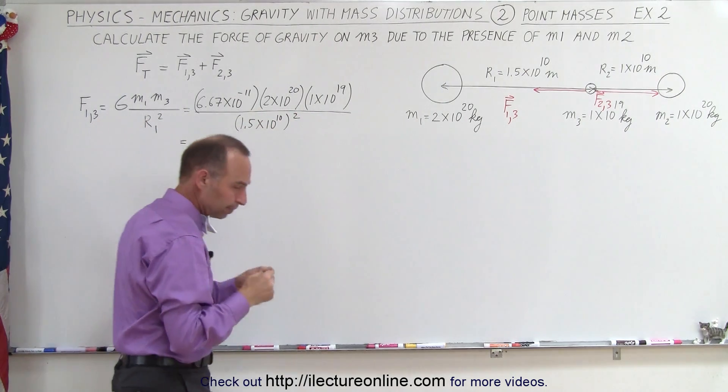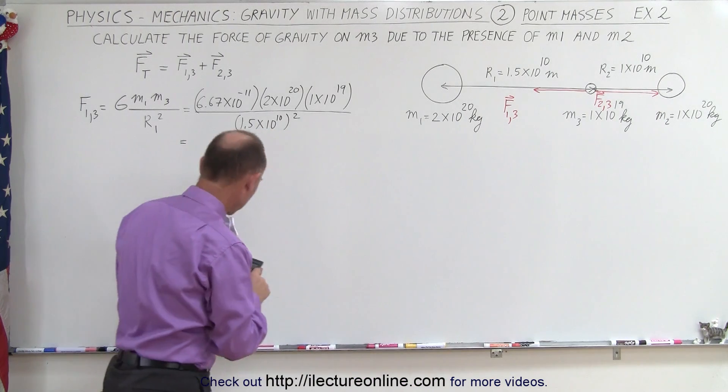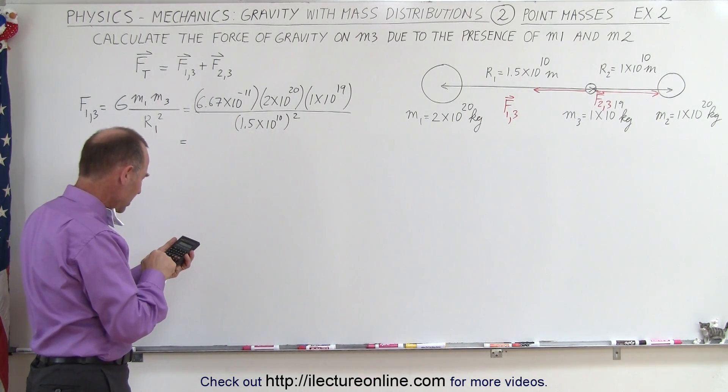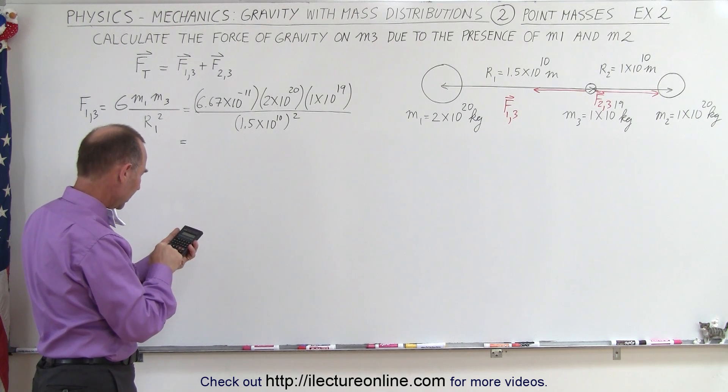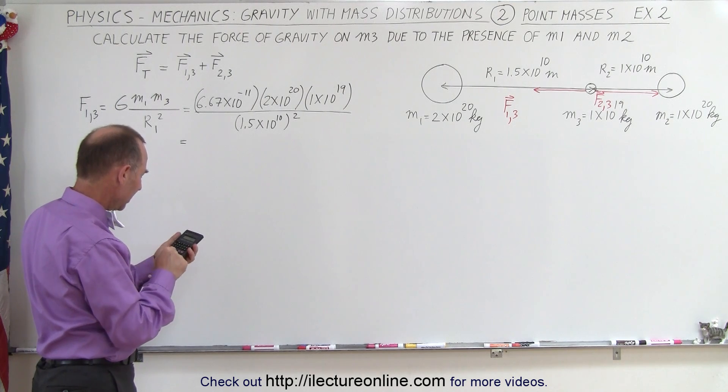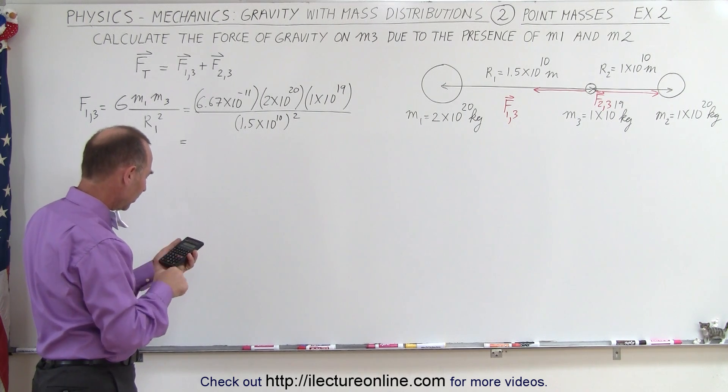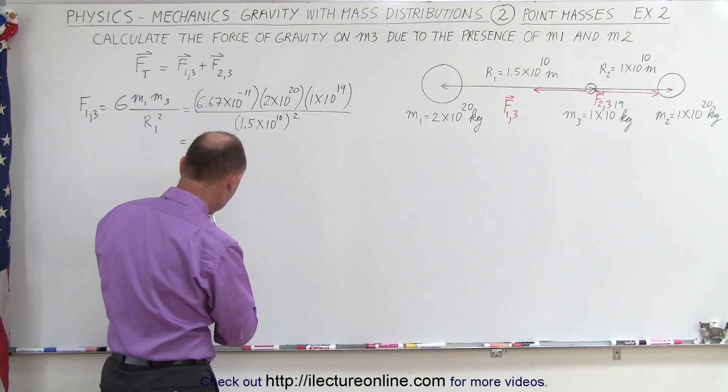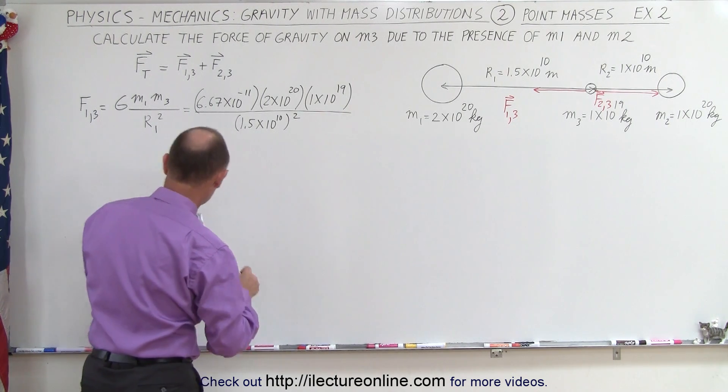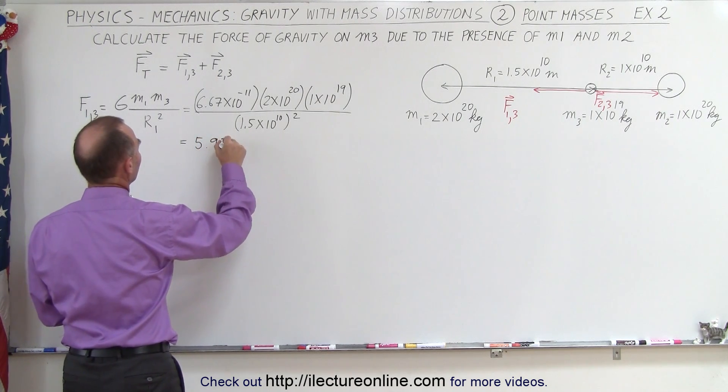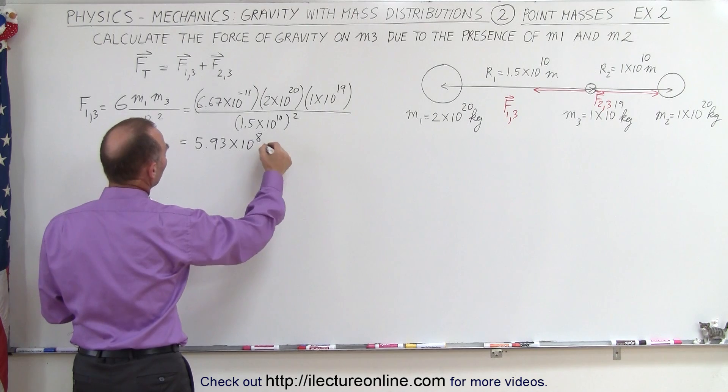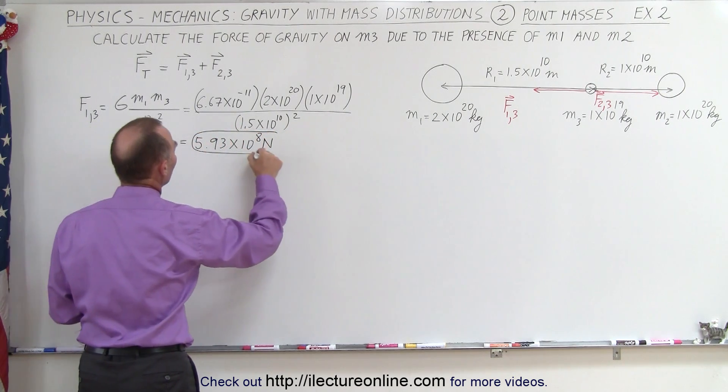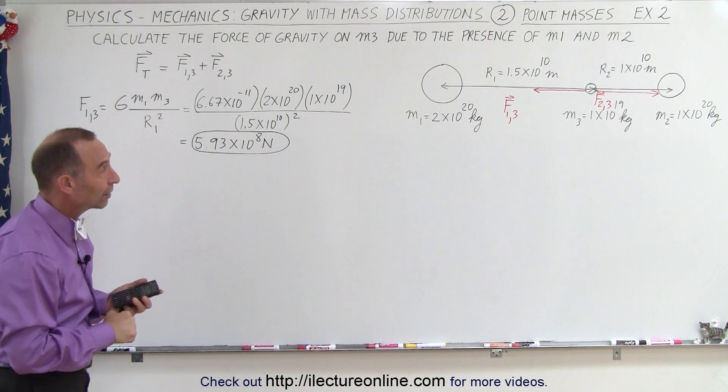So that is going to be equal to 6.67 times 10 to the minus 11, times 2 times 10 to the 20th, times 1 times 10 to the 19th, and divide the whole thing by 1.5 times 10 to the 10th squared. That'll be 5.93 times 10 to the 8th, and that would be in Newtons. So this is the force between 1 and 3, and it's going to be acting to the left.